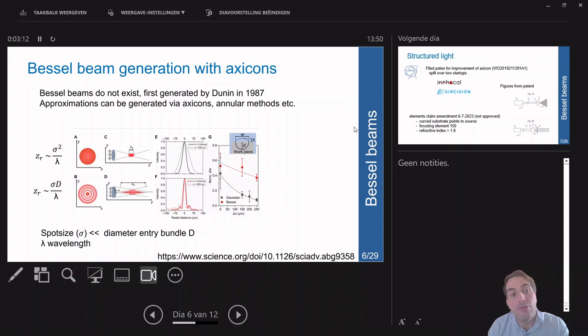Bessel beams do not exist, but an approximation was generated first by Durnin in 1987. There are multiple ways of creating these approximations, and axicons are a very popular method of doing that.